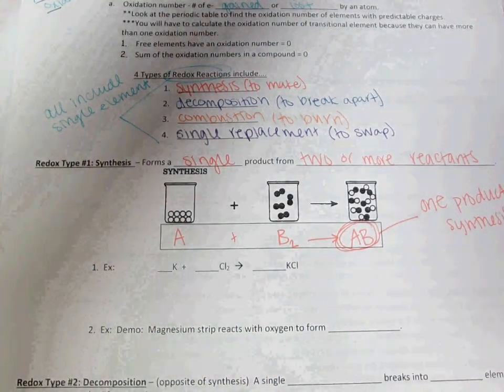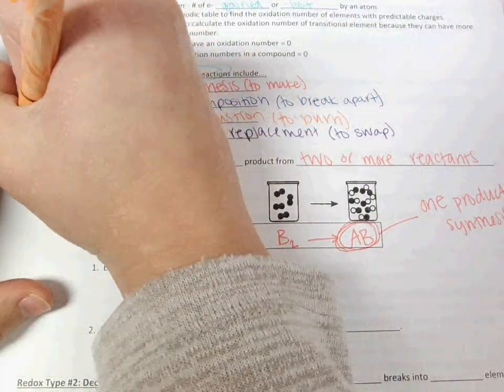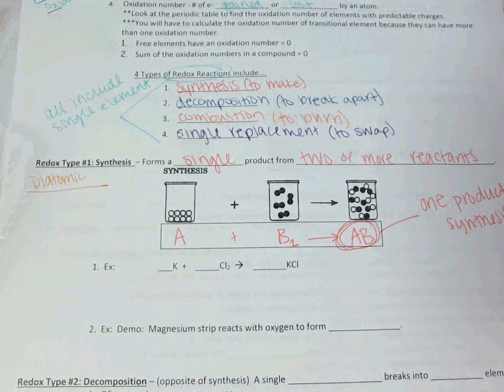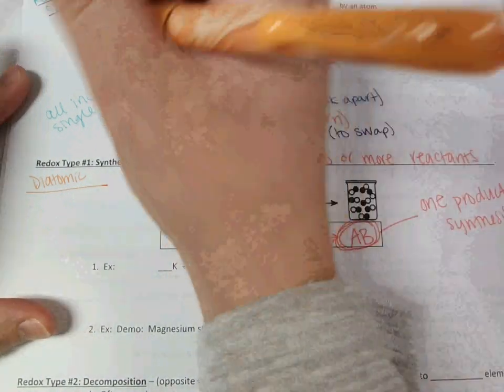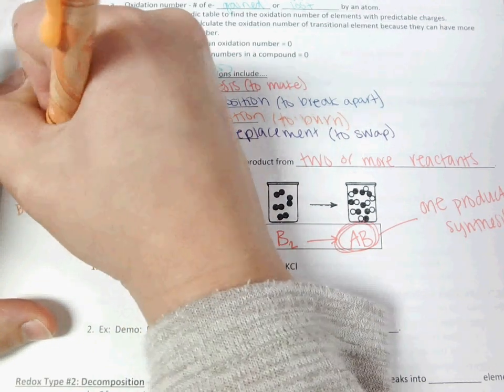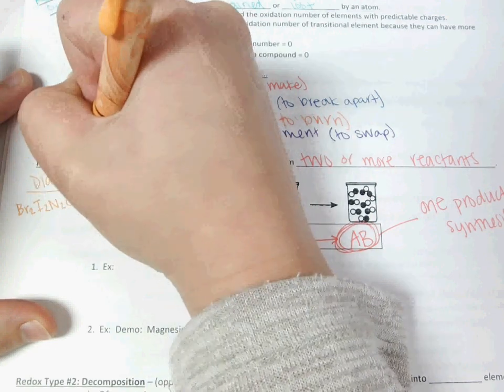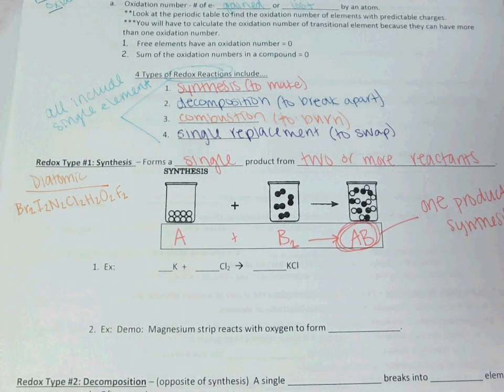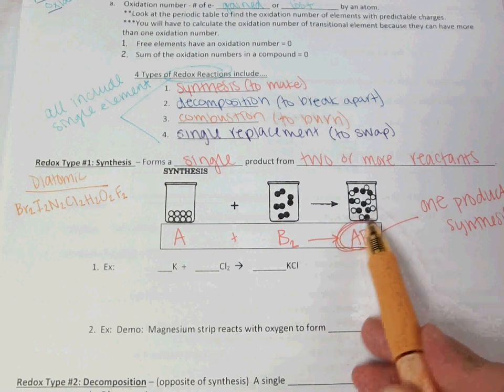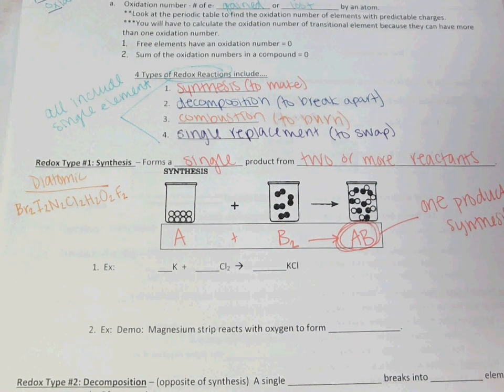As a reminder of what our diatomic elements are, you do have this written on your periodic tables. These are all listed in pairs. This is our Brinkelhoff elements: Br2, I2, N2, Cl2, H2, O2, and F2. All of those elements are diatomic, which means that when they are single elements, when they're on their own, when they're not part of a compound, they will have a subscript of 2. When they're part of a compound, they don't need to be diatomic because that compound is what's taking care of how many there are.